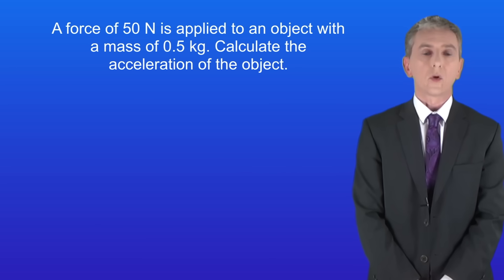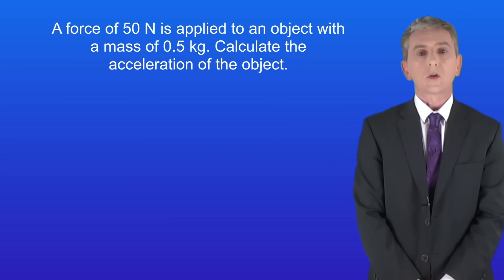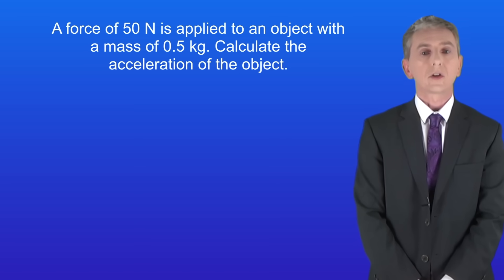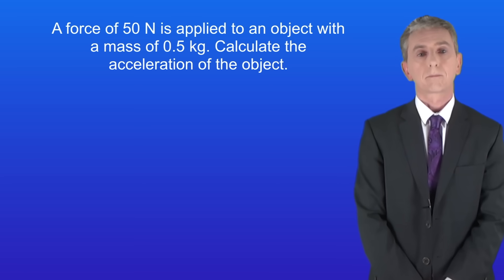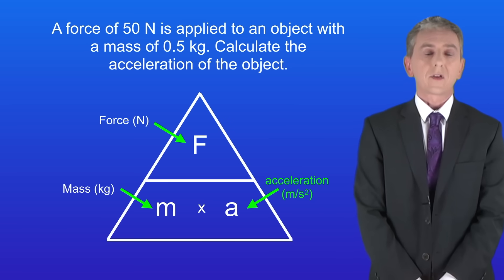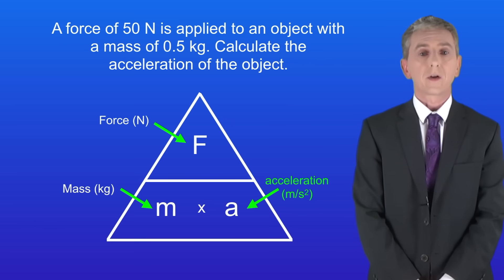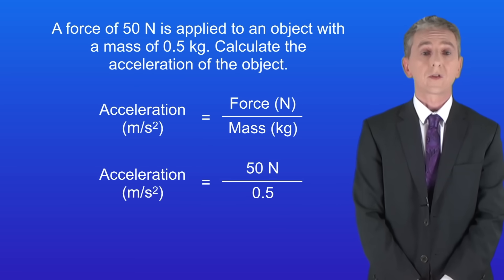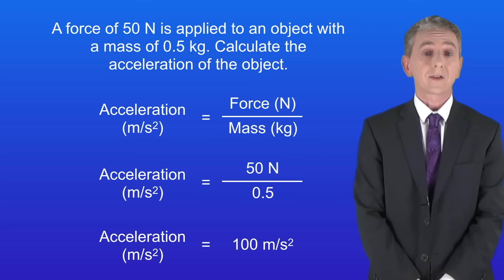Here's another question: a force of 50 newtons is applied to an object with a mass of 0.5 kilograms. Calculate the acceleration of the object. Pause the video and try this yourself. In this case we need to calculate the acceleration. Looking at the triangle, the acceleration is the force divided by the mass. The force is 50 newtons and the mass is 0.5 kilograms, giving us an acceleration of 100 meters per second squared.